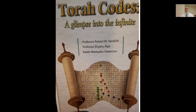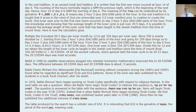Then Professor Amalek, on his site Torahcode.us, carries more into this material and says the following. In the oral tradition, in an ancient book called 'Soda Ebu' — the Secret of the Ebu — it is written that the first new moon occurred at hour 14 of day 6. The counting of the hour nominally begins at 6 p.m. the previous night, which is the beginning of the next day. Hence, hour 14 of day 6 is 8 a.m., the morning of day 6.